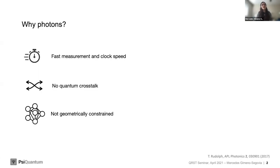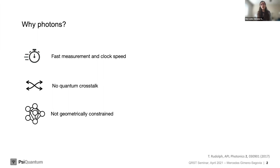First, I want to explain why we use photons. Photons have a number of very good advantages. Particularly, we can have fast measurement and clock speed. This fast measurement allows us to remove noise from the system early, which means we can unburden our error correction code to cope with higher errors in our hardware. Photons do not interact — at the single photon level with linear optical operations — leading to no quantum crosstalk. Finally, geometrically, photons are not constrained to being in a particular place in space, which allows us to explore higher-dimensional error correcting codes.